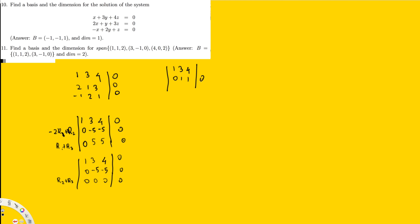We simplify the second row by dividing by -5, giving 0 1 1 0, and the bottom row stays 0 0 0 0. Then we eliminate the 3 in the first row by multiplying the second row by -3 and adding to the first row: -3R2 + R1 gives 1 0 1 0. So our matrix is now 1 0 1 0 / 0 1 1 0 / 0 0 0 0.